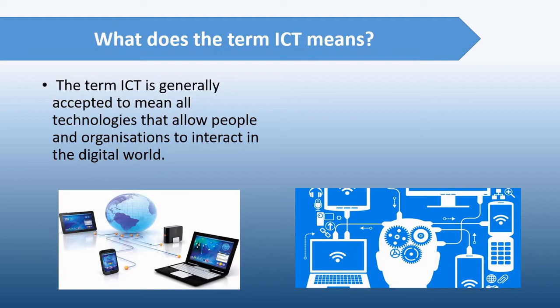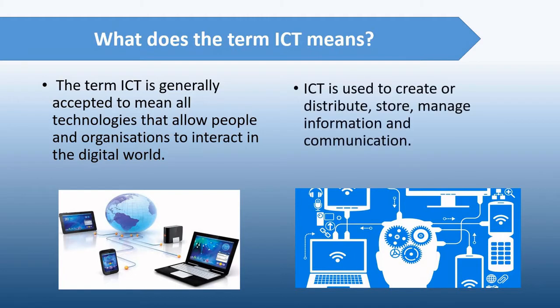ICT refers to all devices, network components, applications, and systems that facilitate interaction with the digital world — such as computers, televisions, cell phones, radios, and the internet. So what does ICT do? ICT is used to create, distribute, store, manage information and communication.